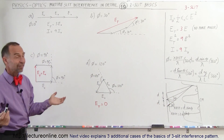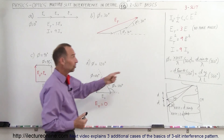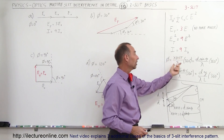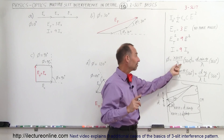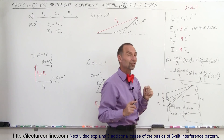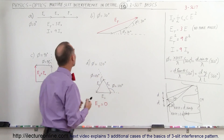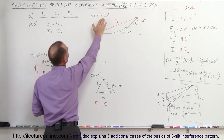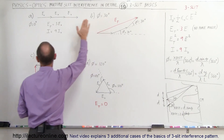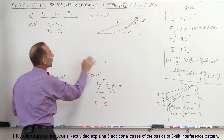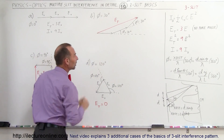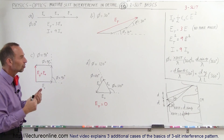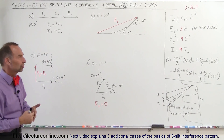The phase angle is still equal to the ratio of the extra distance traveled divided by the wavelength, times 360 degrees. So here we have some examples where the phase angle is zero, the phase angle is 30 degrees, the phase angle is 90 degrees, and the phase angle is 120 degrees — just graphically to get a feel of what that looks like as far as adding up the phasors.